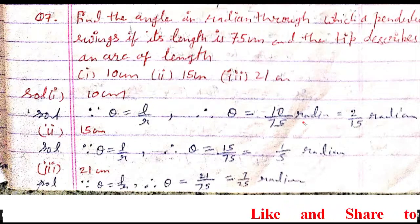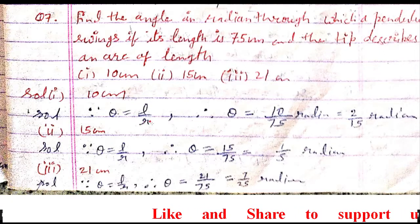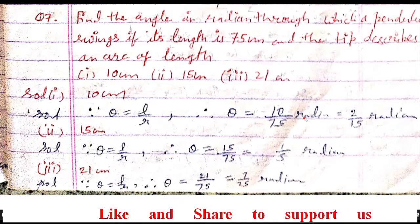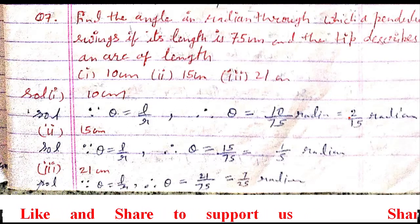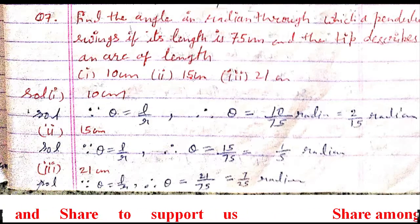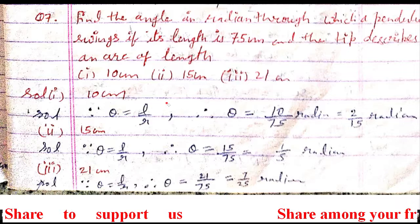In that, you substitute the value. And since this formula is applicable for the radian measure, whatever answer will come, it is also going to be in radians. So cancel it, you will get 2/15. In the same way, here we have 15 centimeters.